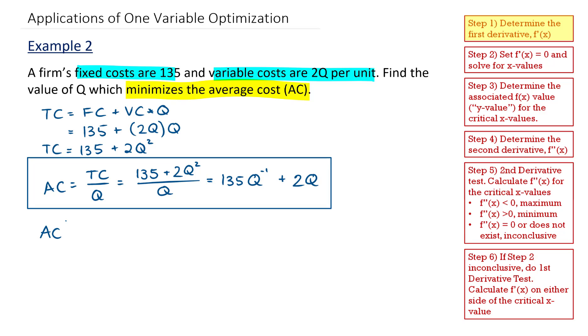Average cost prime, or alternatively, the derivative of average cost with respect to quantity, is going to be, for 135Q to the power of negative 1, the derivative becomes negative 135Q to the power of negative 2. And for the derivative of 2Q, I get 2.